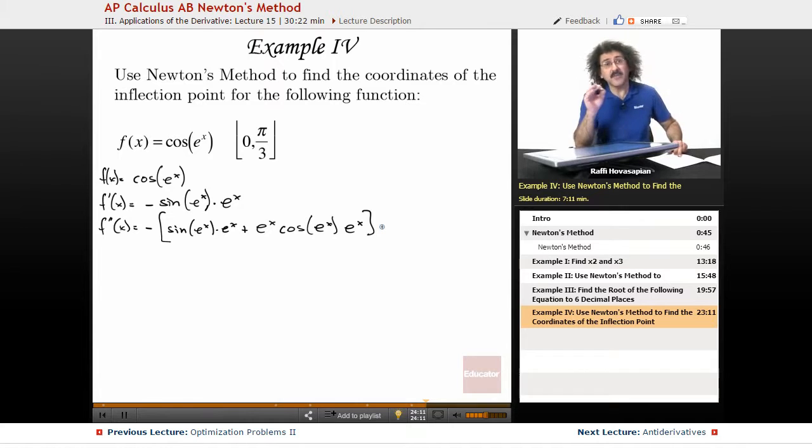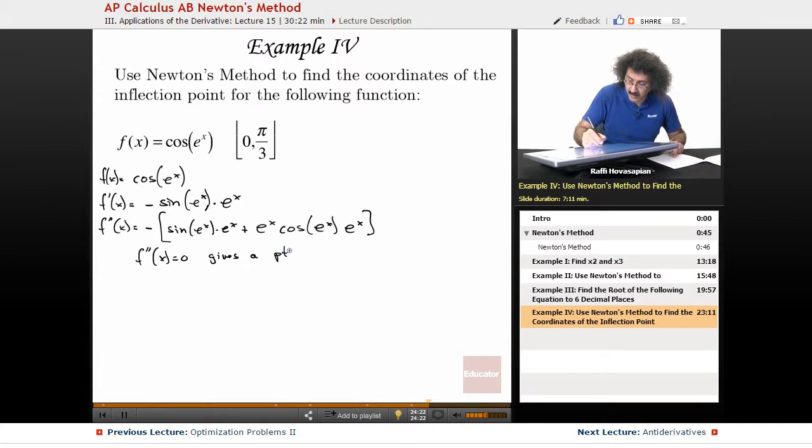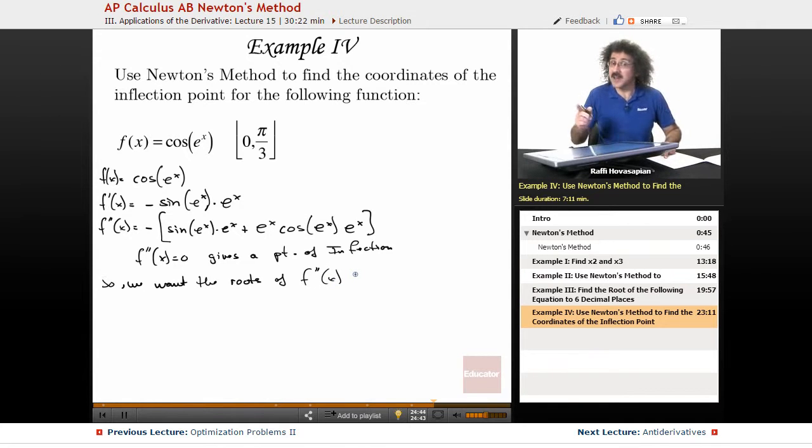Now, a point of inflection is where the second derivative, f double prime, is equal to 0. So f double prime of x equals 0 gives a point of inflection. So we want the roots of f double prime, the roots of f double prime of x, not f of x.